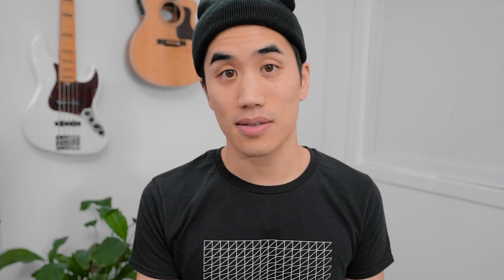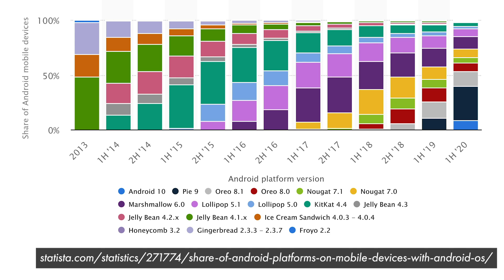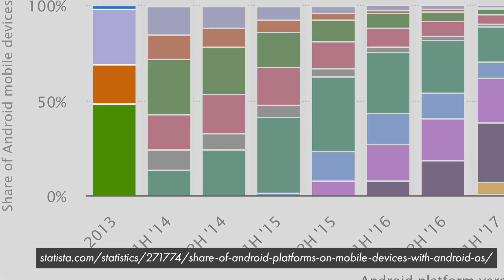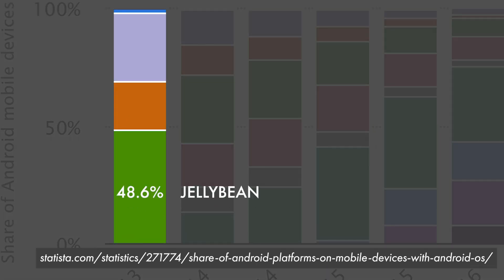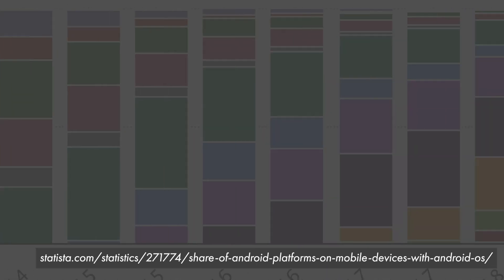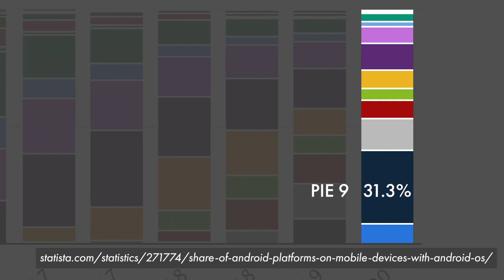Fragmentation also happens on the level of the operating system. One report found that 95% of iOS users have one of the latest two operating systems installed. By contrast, on Android, just look at this graph — nowhere is there a time when you even had a simple majority of users on the same operating system. The closest we come is in 2013, when 48.6% of users were on Jellybean. In 2020, we had slightly less than a third of users on Pie, and the rest is even more fragmented than that.